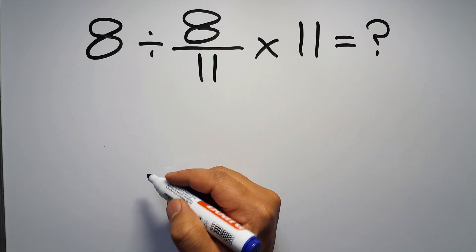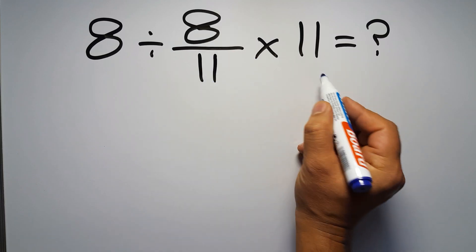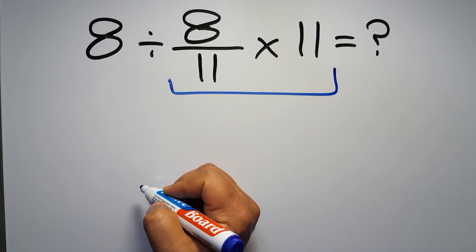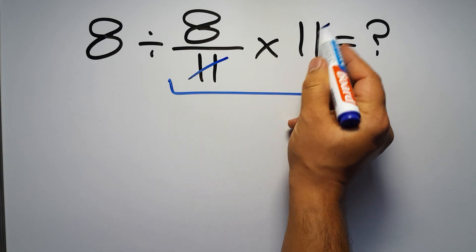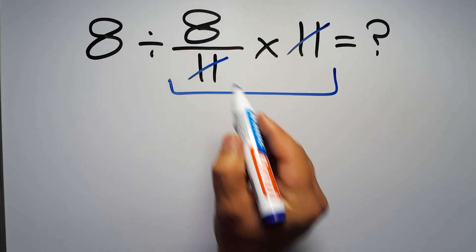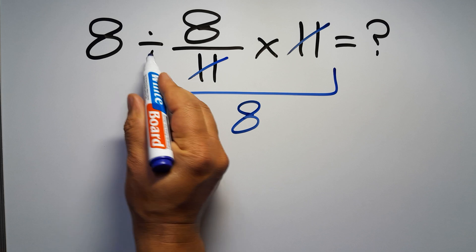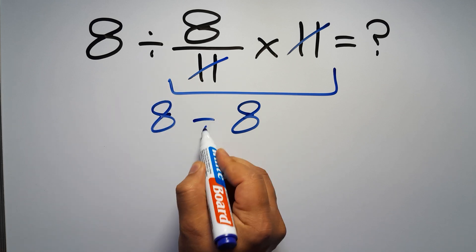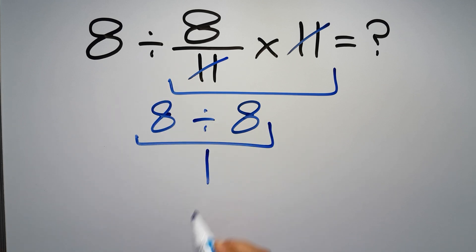First we do this multiplication, 8 over 11 times 11. We can easily cancel this 11 and this 11, so here we have just 8. So 8 divided by 8, which equals 1. But this answer is not correct because...